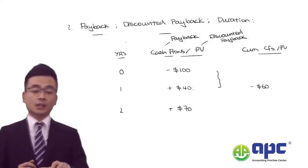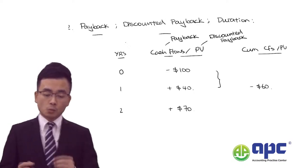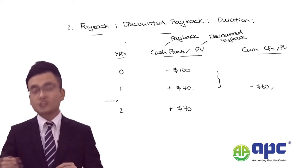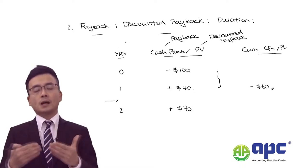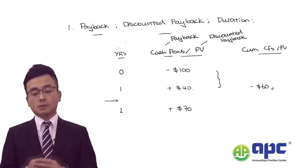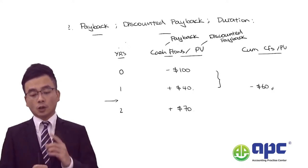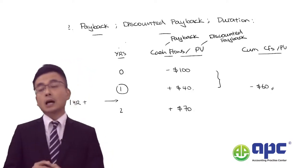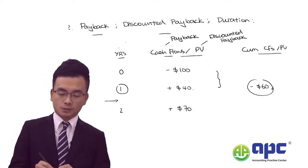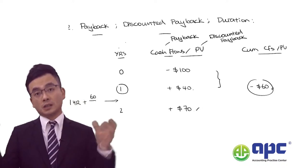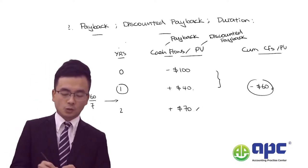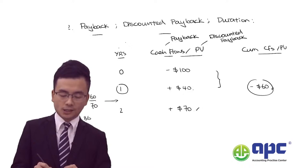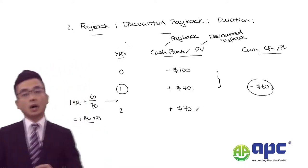By how much? It's somewhere between year one and year two. At the end of year one you still had $60 as the target. You need to pay an additional $60 back, but at year two you paid $70 in total. So I take one year as a starting point plus $60 divided by $70, which gives approximately 1.86 years to pay the $100 back.